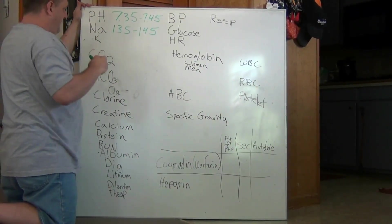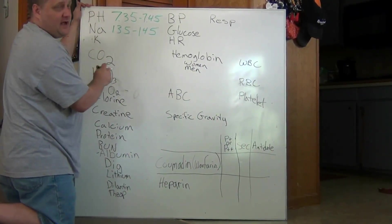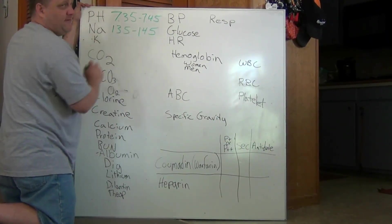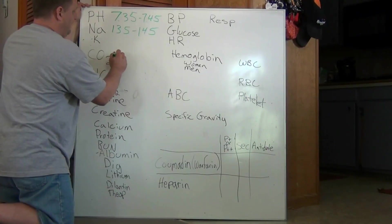If we were to look at carbon dioxide, carbon dioxide would be, we take the 1s off of sodium and we get 35 to 45.